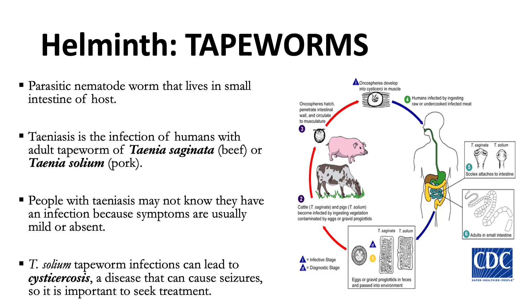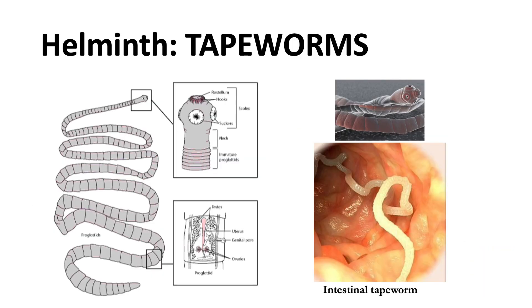The eggs contained in the gravid proglottids are released after the proglottids are passed with the feces. Taenia saginata may produce up to 100,000 eggs per proglottid, and Taenia solium may produce 50,000 eggs per proglottid. Always look for the proglottids to differentiate tapeworms from other helminths, as this is a characteristic feature of tapeworms.